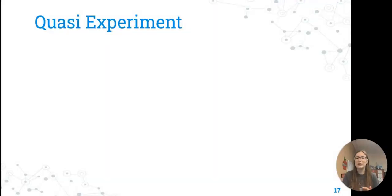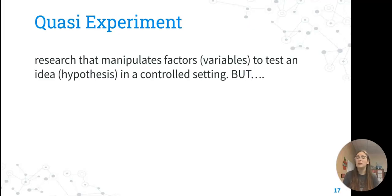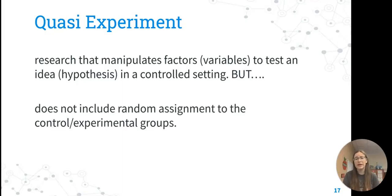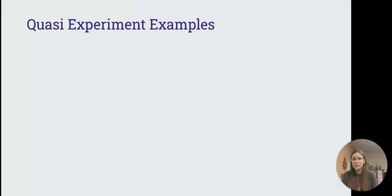If we have something that is a little more ethically questionable, but we really want to gather some information, we may do something called a quasi-experiment. This is where we're going to have manipulated factors of variables in a controlled setting, but we didn't do any random assignment to the control or experimental groups. Why would we do this? What are some things that we might want to study that could be harmful to participants?